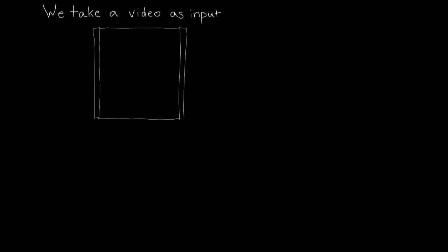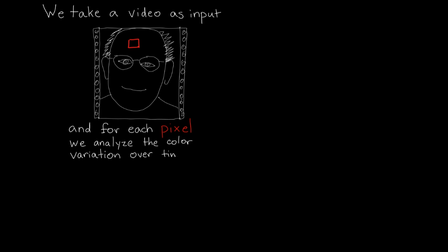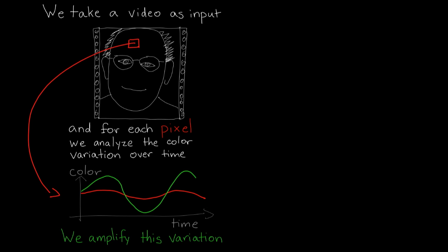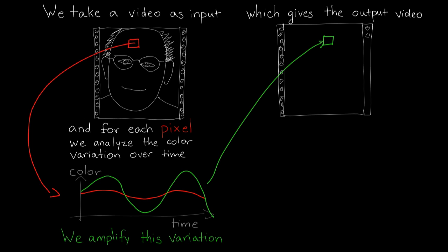These changes are hidden in ordinary videos we capture with our cameras and smartphones. Given an input video, for each pixel we analyze the color variation over time and amplify this variation, which gives us a magnified version of the video.